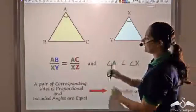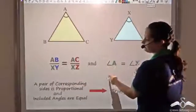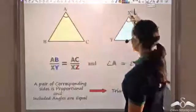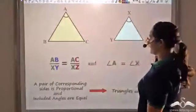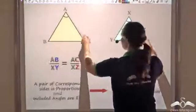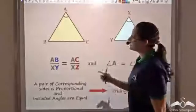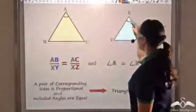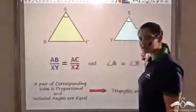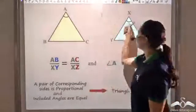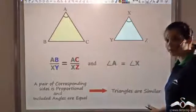So we take one pair of proportional sides and the included angle between them. We take AB/XY equal to AC/XZ — these are the two pairs of sides — and the included angle, which is angle A equals angle X. So if a pair of corresponding sides and the included angle between them is equal, then I can say the triangles would be similar.